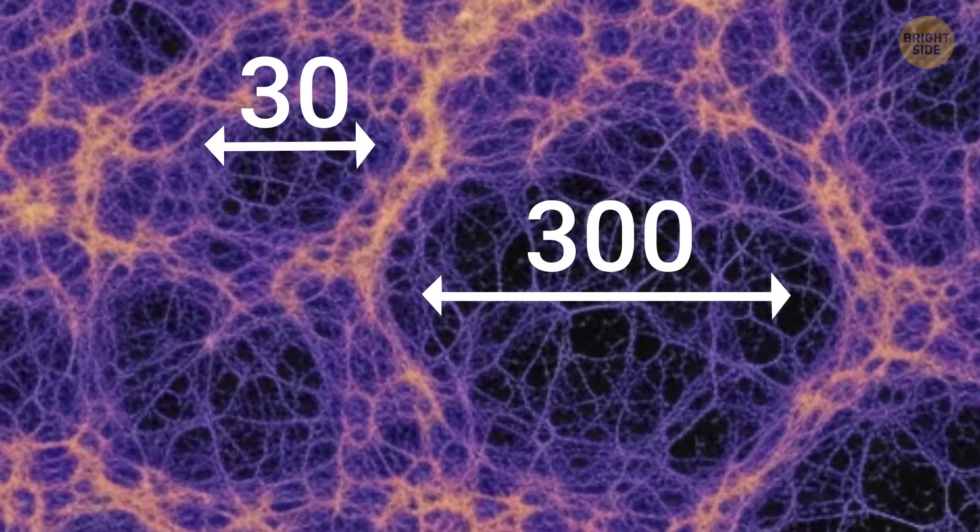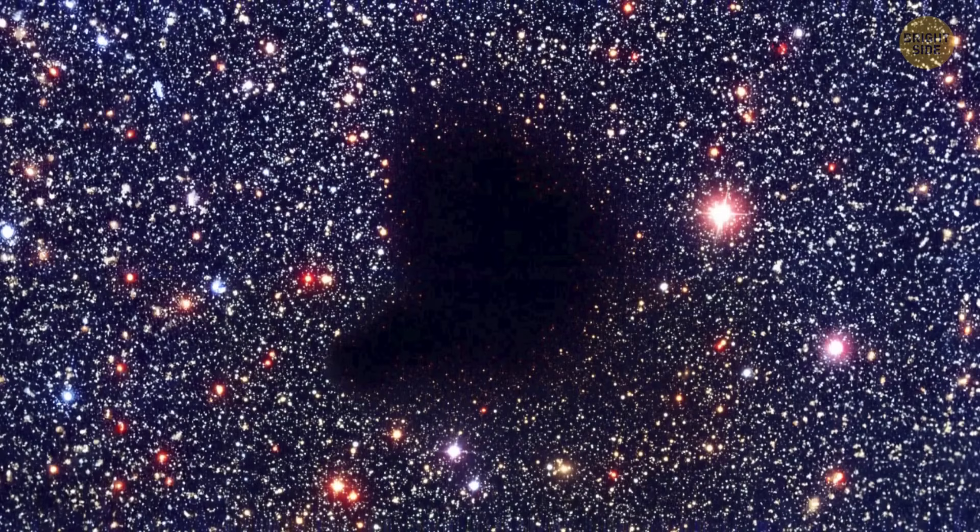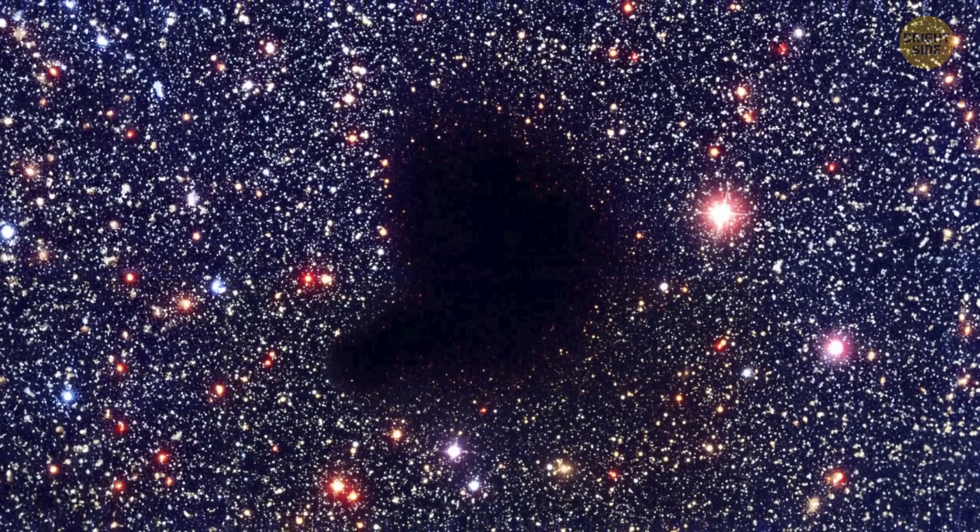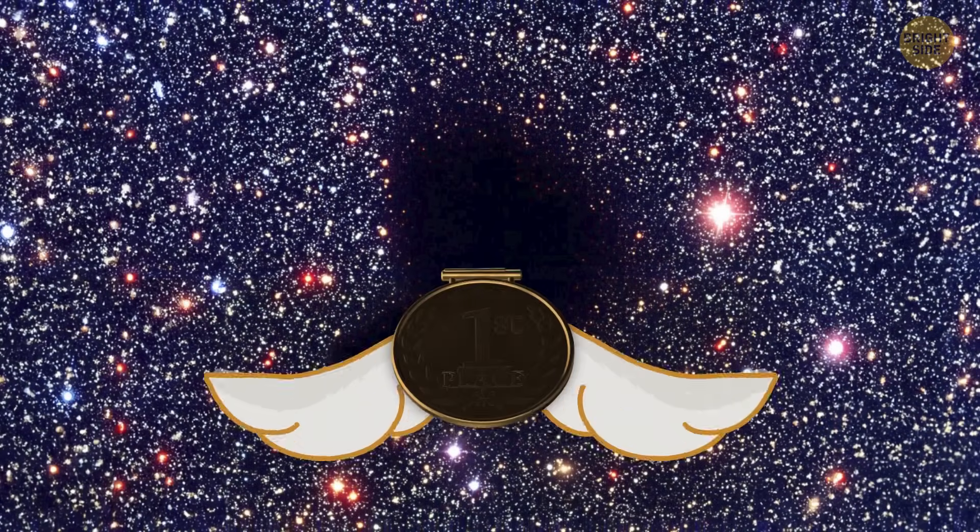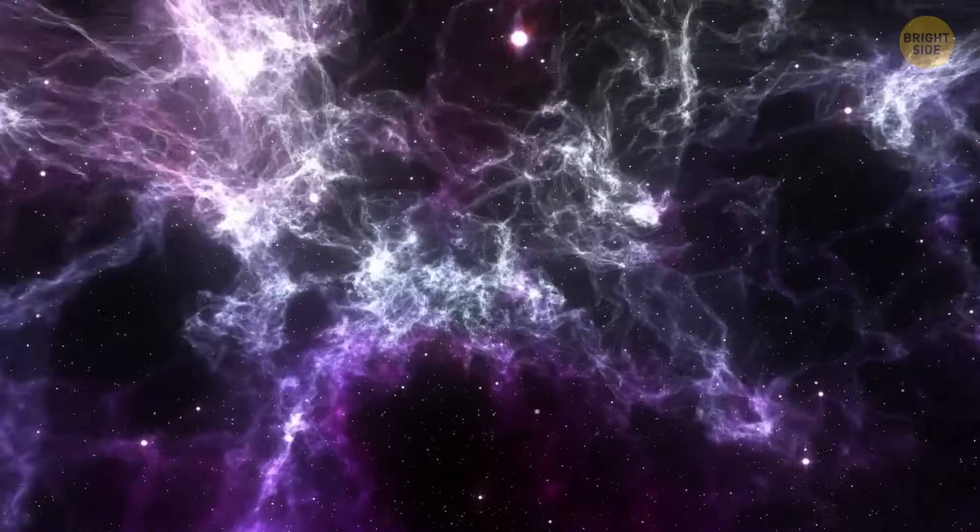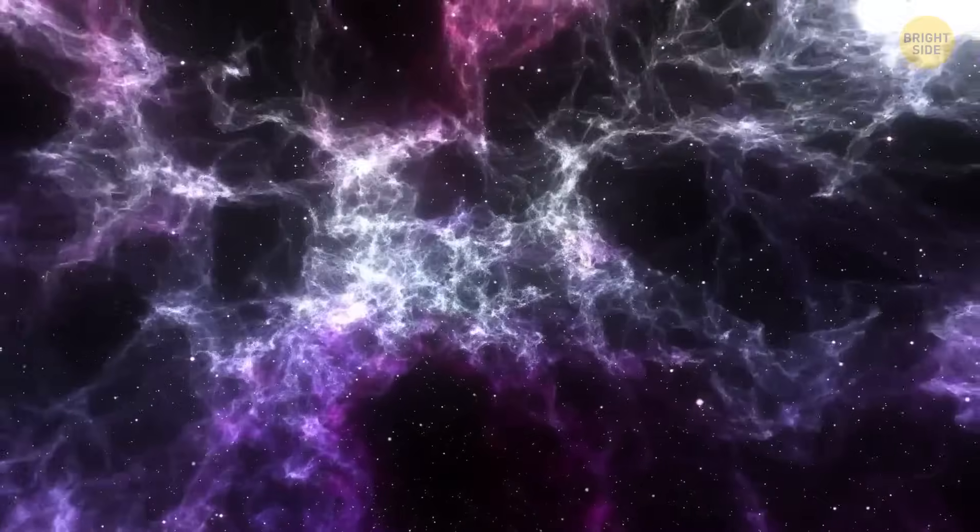Such voids actually make up almost 80% of the observable universe, and most of them are huge, from 30 to 300 million light-years wide. The Boötes void is one of the most massive ones. It's even earned the title of Super Void. Astronomers think it might be the result of a few smaller voids merging together.